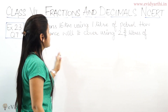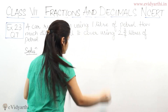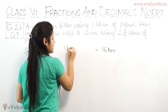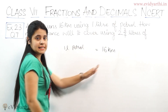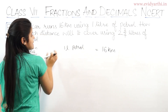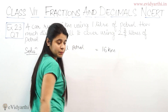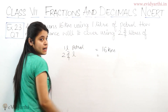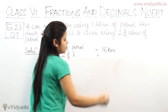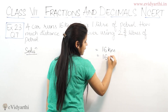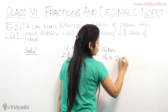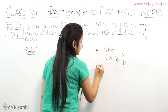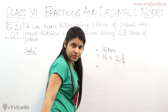So the distance will be equal to 16 multiplied by 2 and 3 by 4 litres. That is, 1 litre gives 16 km, so multiply 16 into 2 and 3 by 4.